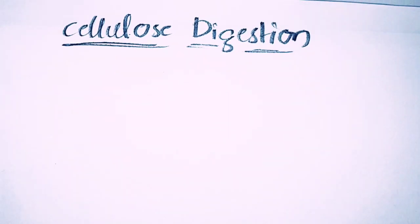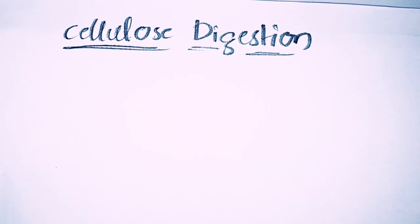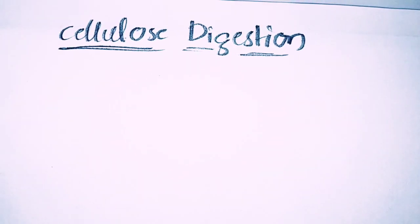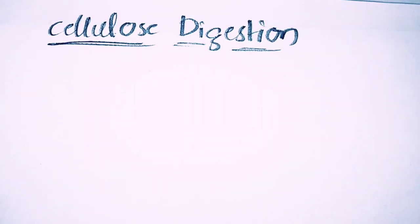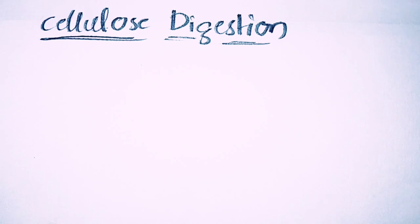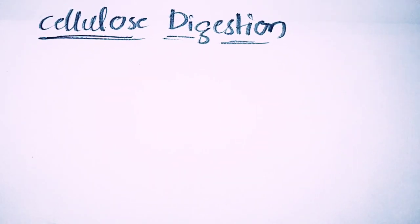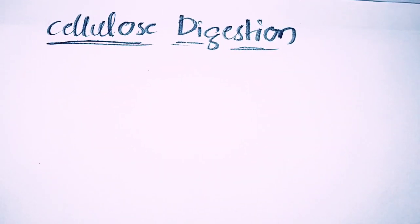Generally, cellulose can be digested or can be hydrolyzed using microbes like bacteria, fungi, protozoa, and many more other microorganisms that can be helpful for the production of cellulase enzymes, which results in the breakdown of cellulose.